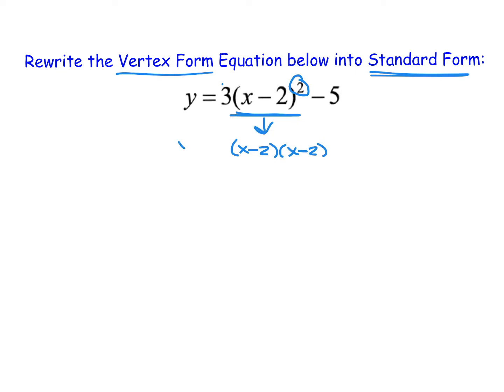So we can rewrite this entire expression by instead of writing x minus 2 quantity squared, we can write 3 times x minus 2 times x minus 2, which is the definition of squared. It's just something times itself. So this is looking a little bit better. We've at least gotten the squared out of the problem, so we can now hopefully start to rewrite this a little bit further.